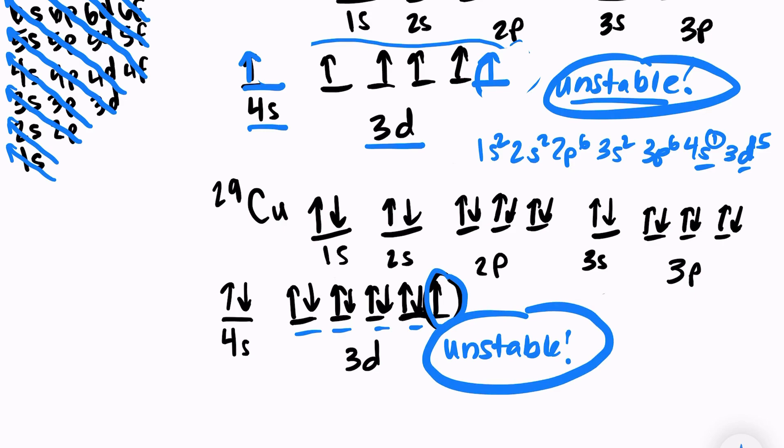And the same thing is going to happen. We're going to take one electron from 4s and move it over into the 3d orbital. So what this will look like is again, we will have 4s1, but now we're going to have 3d10. So if we were to write out the electron configuration, we would have 4s1, 3d10, instead of 4s2, 3d9.